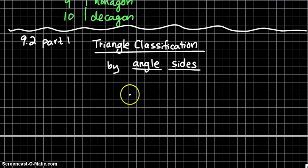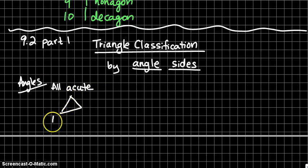So to get the first name of a triangle, if all of the angles are acute, so that means between 0 and 90, it is called an acute triangle. So the first name would be acute.